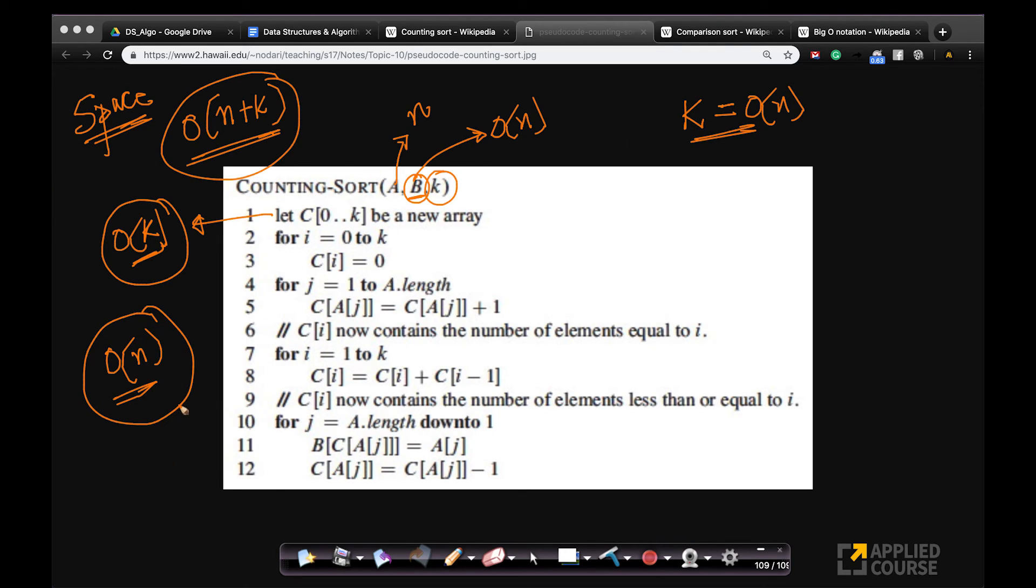So the space and time complexity analysis of counting sort is straightforward because all we have is for loops. We don't have any recursion or something crazy the way we had in quick sort or merge sort. This is straightforward going through the loop. Nothing very fancy. This is straightforward, extremely simple analysis.